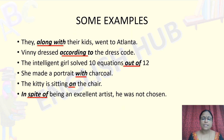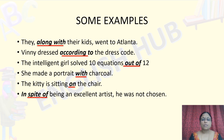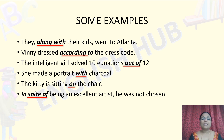Let's look at some examples. They, along with their kids, went to Atlanta. Winnie dressed according to the dress code. The intelligent girl solved 10 equations out of 12. She made a portrait with charcoal. The kitty is sitting on the chair. In spite of being an excellent artist, he was not chosen.